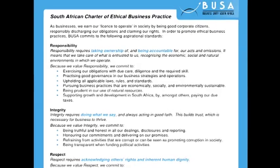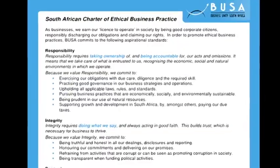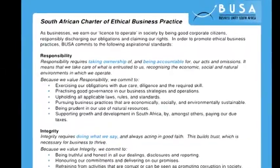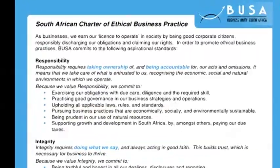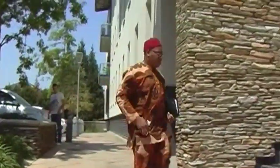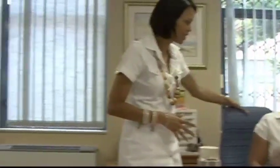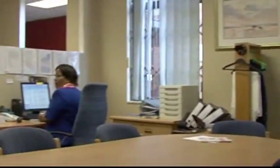Now let's move on to Code of Ethics, which is basically a set of principles of conduct within an organization that guides decision making and behavior. The purpose of the Code of Ethics is to provide members and other interested persons with guidelines for making ethical choices in the conduct of their work. Members of an organization adopt a Code of Ethics to share a dedication to ethical behavior and to declare the organization's principles and standards of practice.